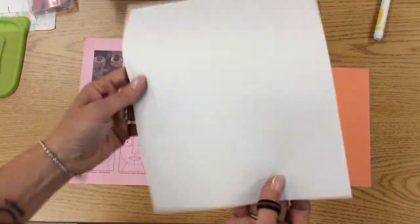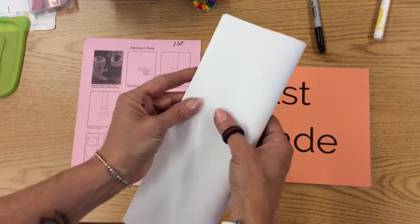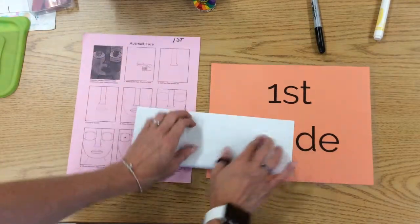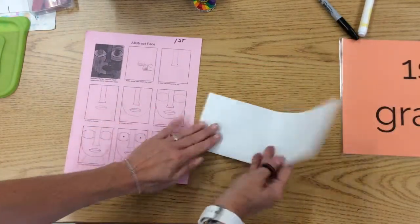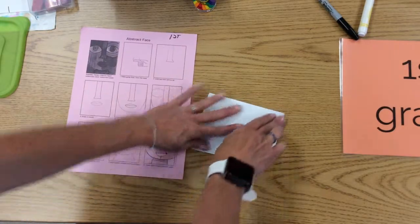You're going to follow step by step. First thing, artists, take your paper, fold it on your table. You're going to massage—paper likes to be massaged—massage and crease. Then fold it again, massage and crease.